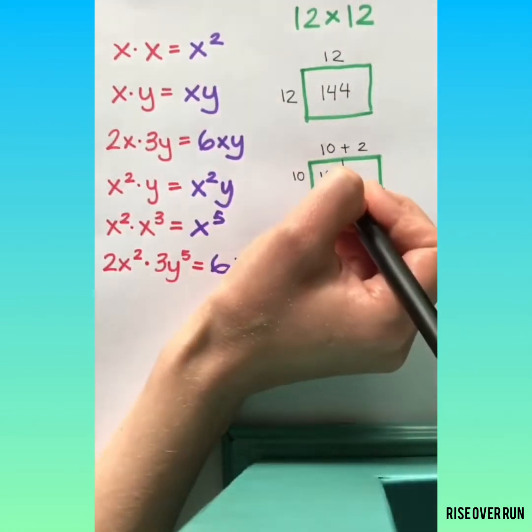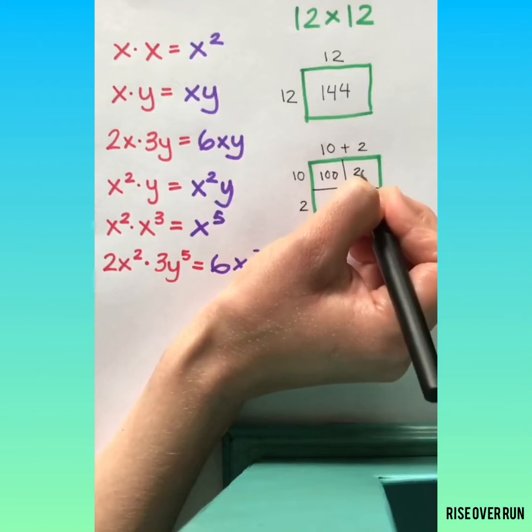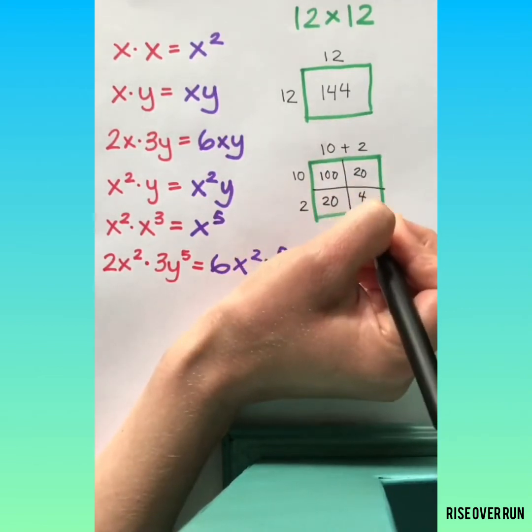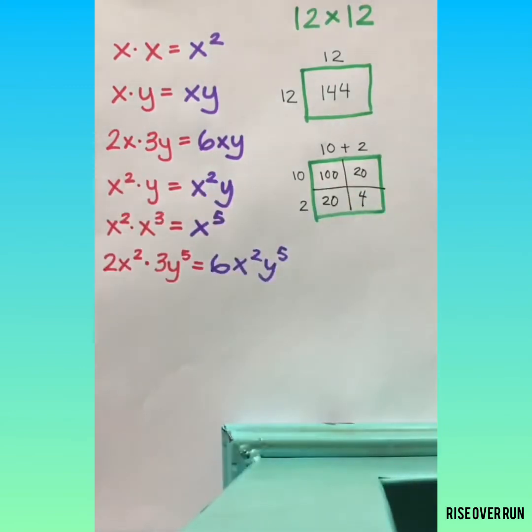10 times 10, 10 times 2, 10 times 2, and 2 times 2. Now if I add these together, I get 144.